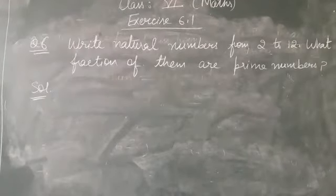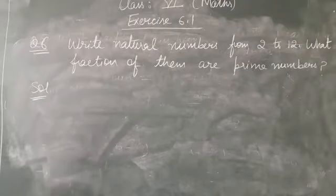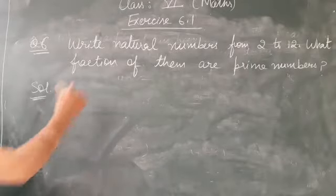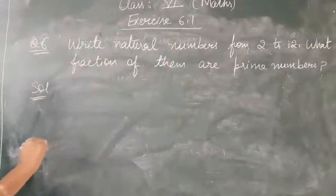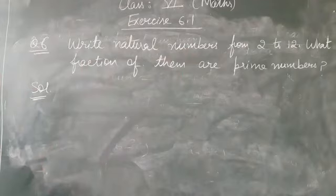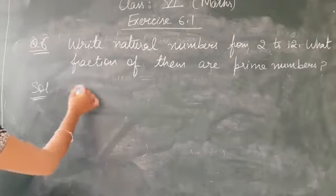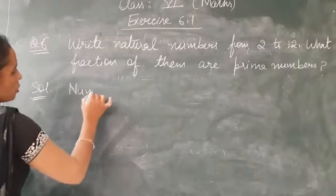Now look at question number 6. Write natural numbers from 2 to 12 and what fraction of them are prime numbers? We have to write the numbers from 2 to 12 and then check how many are prime numbers and what is their fraction.